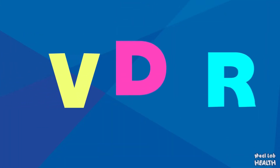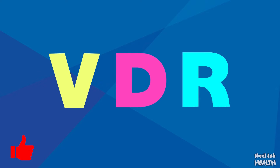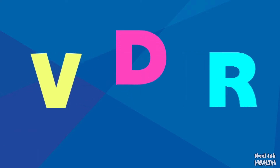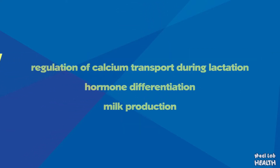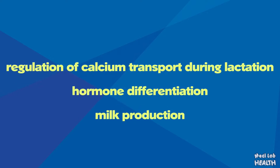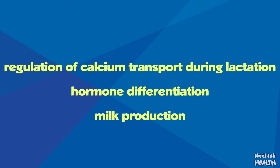Another potential candidate is the gene that encodes the vitamin D receptor, or VDR protein. Vitamin D receptor genes operated by vitamin D have important roles in the mammary gland through regulation of calcium transport during lactation, hormone differentiation, and milk production.